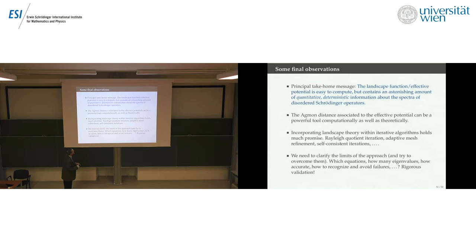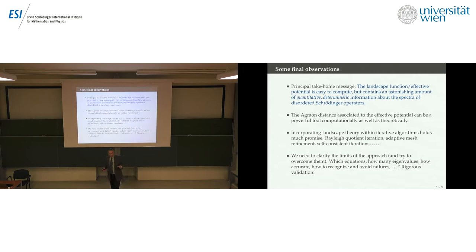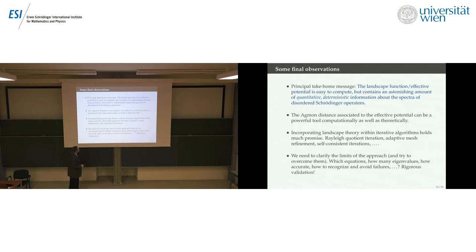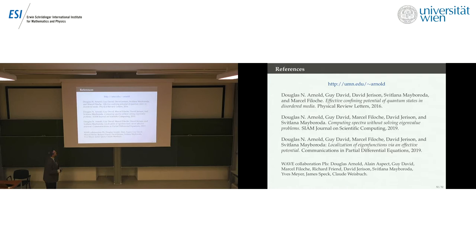To conclude: the landscape function, or effective potential, is easy to compute but seems to contain an astonishing amount of quantitative, deterministic information about the spectrum of disordered Schrödinger operators. It looks at the specific disorder potential — deterministic information, not just statistics over all realizations. The Agmon distance associated to it is a powerful tool. It can provide the kind of initial guesses needed for iterative algorithms, and there are many more questions than answers at this point, with lots of directions to go in the future.